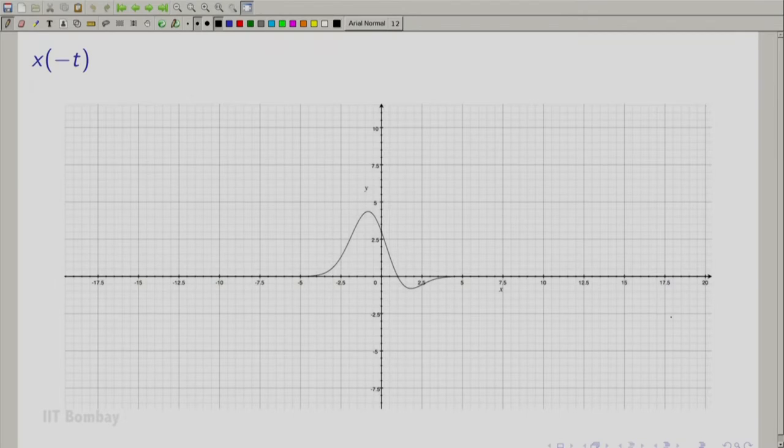Now we move to x(-t). As you can see, the plot has just flipped around the y-axis. I will just show you the previous plot again for reference. So this is how x(-t) looks like. Here, we have multiplied the independent variable which is t by -1 and plotted the function.